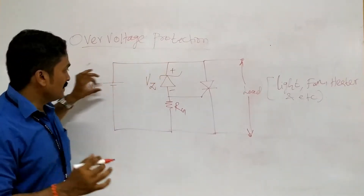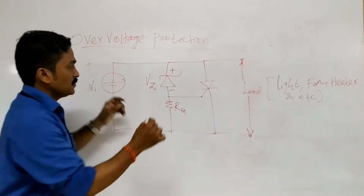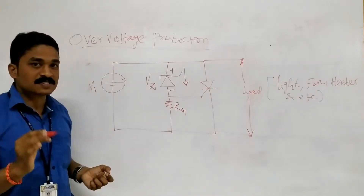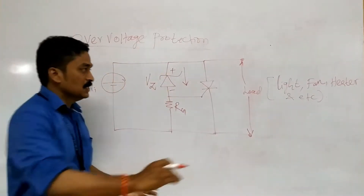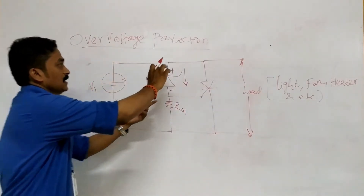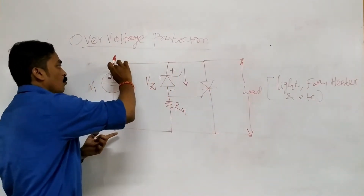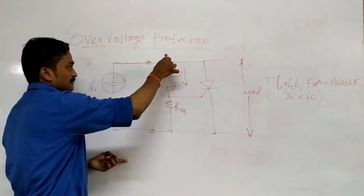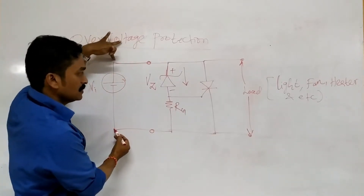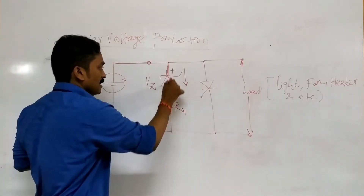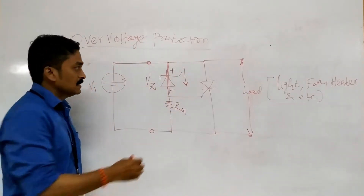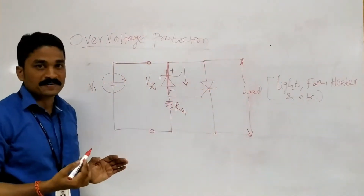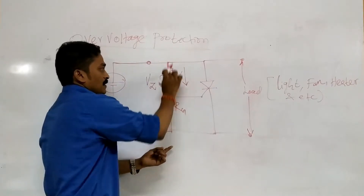The Zener diode works in reverse bias only when we have a high voltage — specifically when the supply voltage exceeds the maximum rated value. Whenever we have an over-voltage in the circuit, the Zener diode will conduct and act as a short circuit, so all the current will flow through the Zener path and not to the load.